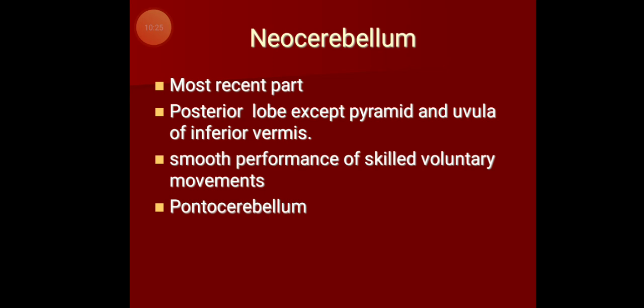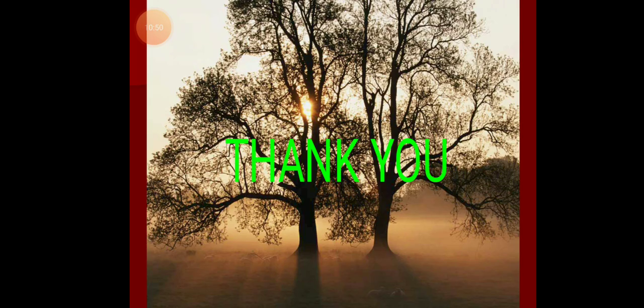With that we finish the two classifications. One is anatomical subdivision into three lobes: anterior lobe, posterior lobe, and flocculonodular lobe. The second is morphological subdivision into three: archicerebellum, paleocerebellum, and neocerebellum. I will continue the next part of cerebellum later. Thank you.